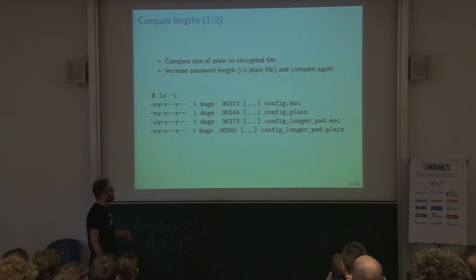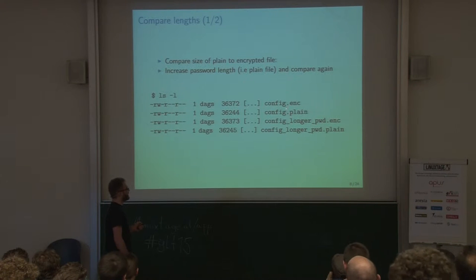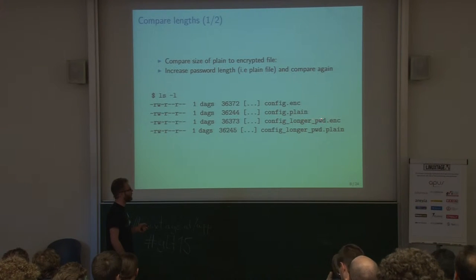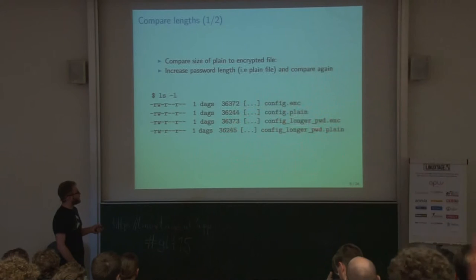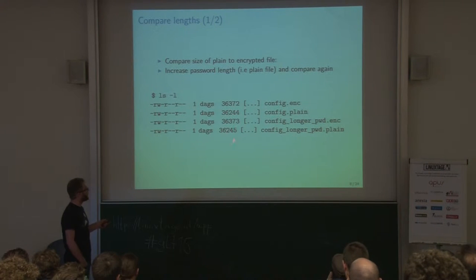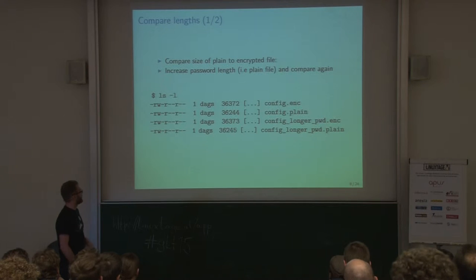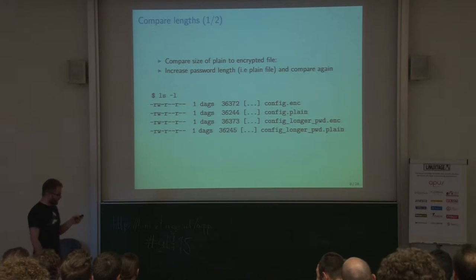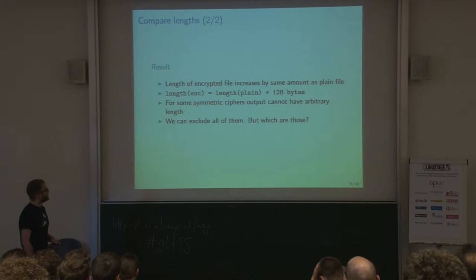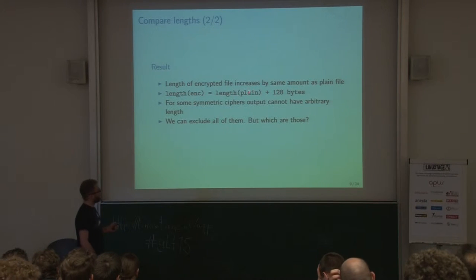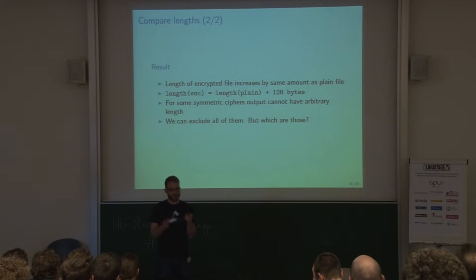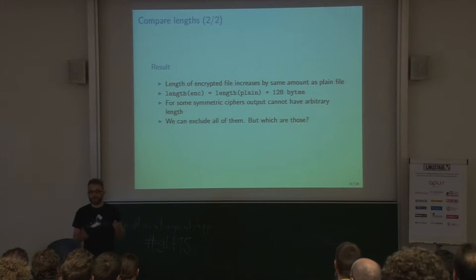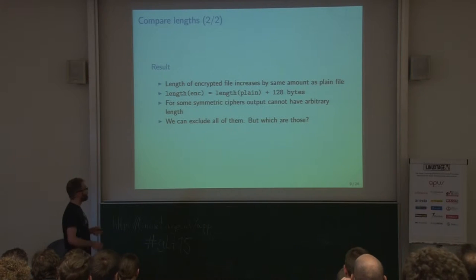We created two files — one simple, one with a longer password — and retrieved both. We also got the plain text versions and compared sizes. You notice the encrypted file size equals the plain text size plus 128 bytes. We tried it several times with different password lengths and concluded this formula holds for everything. With some cryptography knowledge, you know a few cipher types can't produce that kind of output.